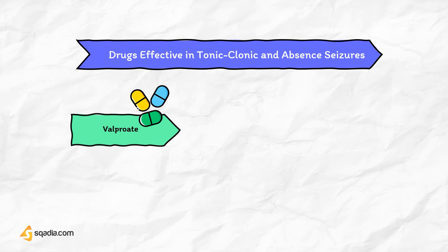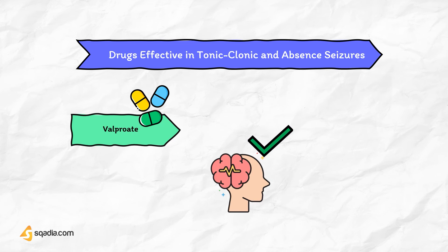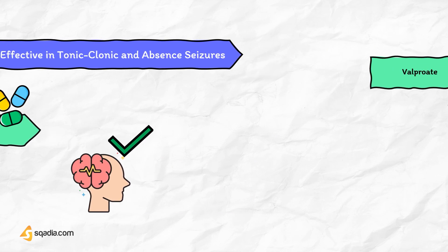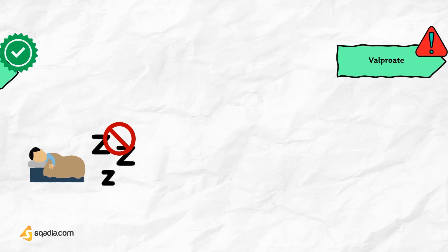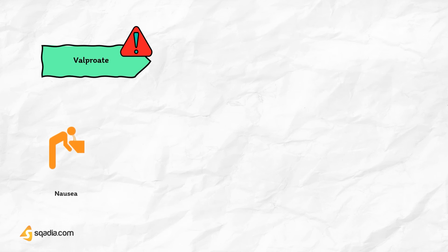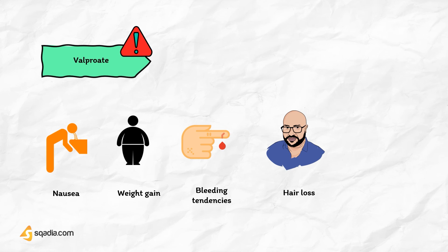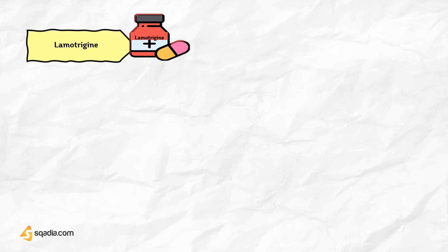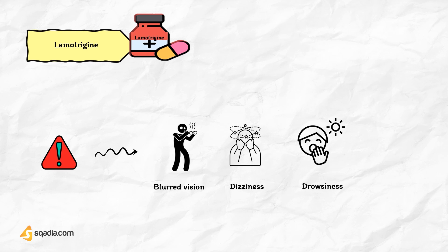Valproate is a very effective anti-epileptic drug useful in many types of epilepsies, including absence seizures, focal onset, and generalized tonic-clonic seizures. Its advantages are its relative lack of sedative effects, wide spectrum of activity, and mild nature of most adverse effects — nausea, weight gain, bleeding tendencies, and transient hair loss. The main disadvantage is that occasional idiosyncratic responses cause severe or fatal hepatic toxicity. Lamotrigine is used alone or in combination with other agents. Adverse effects include blurred vision, dizziness, and drowsiness. Serious skin reactions may occur especially in children, including Stevens-Johnson syndrome and toxic epidermal necrolysis.